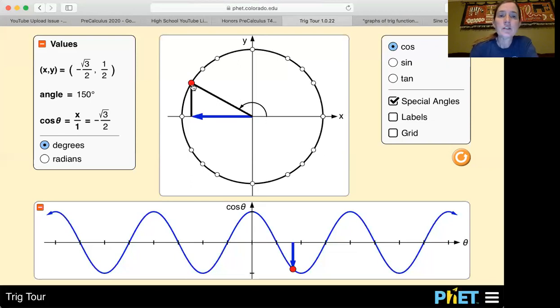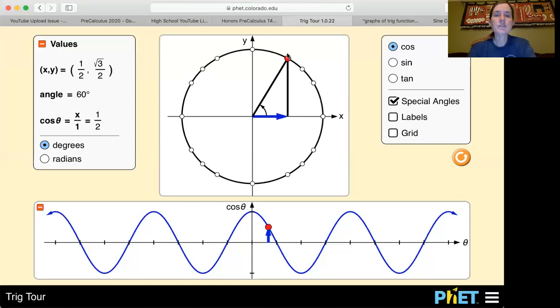And then let's look at a 60 degree triangle. So if this is 60 degrees up here, this now is 60 degrees, this is 1 half, this is square root of 3 over 2, and our hypotenuse is 1.